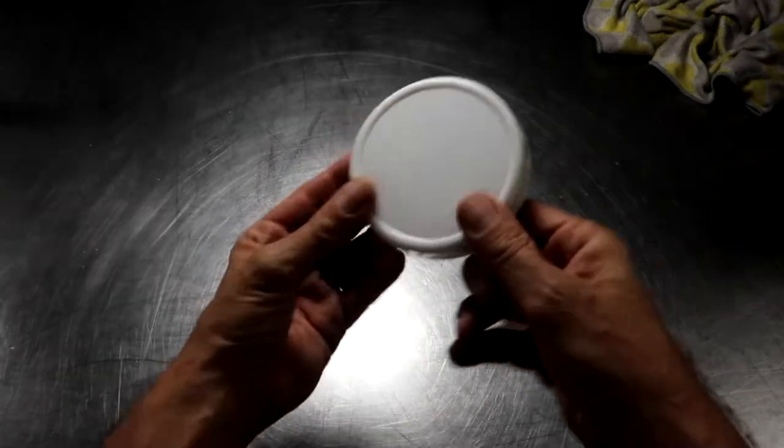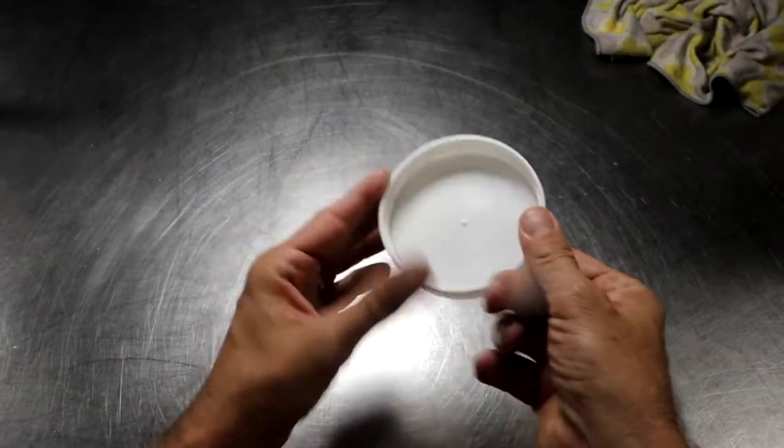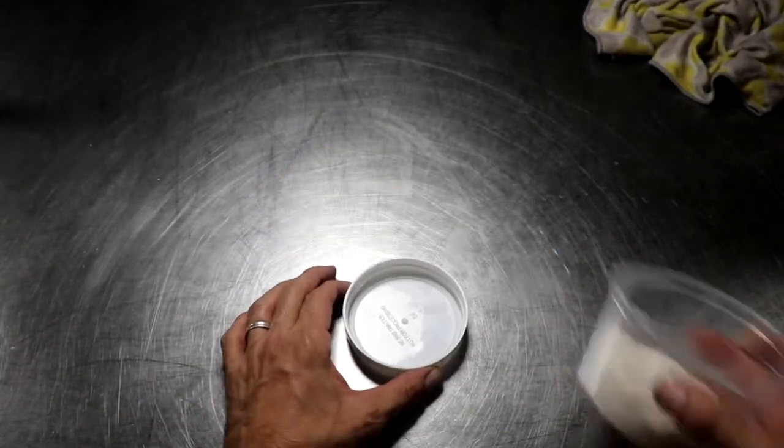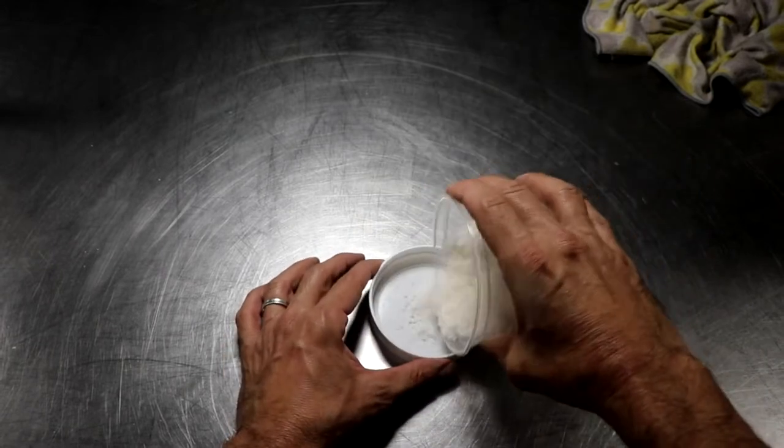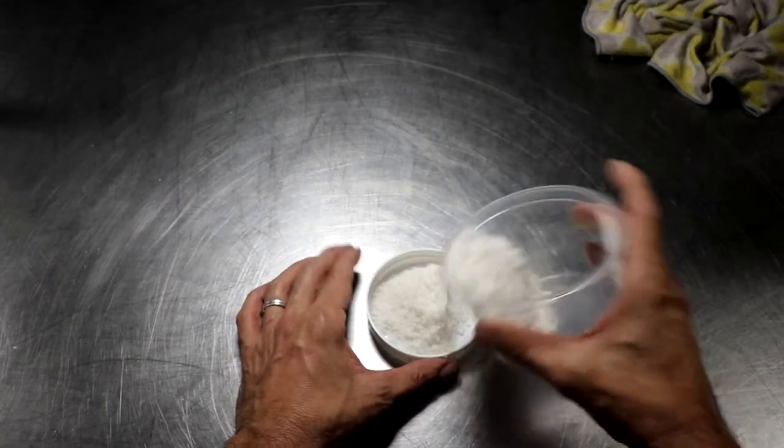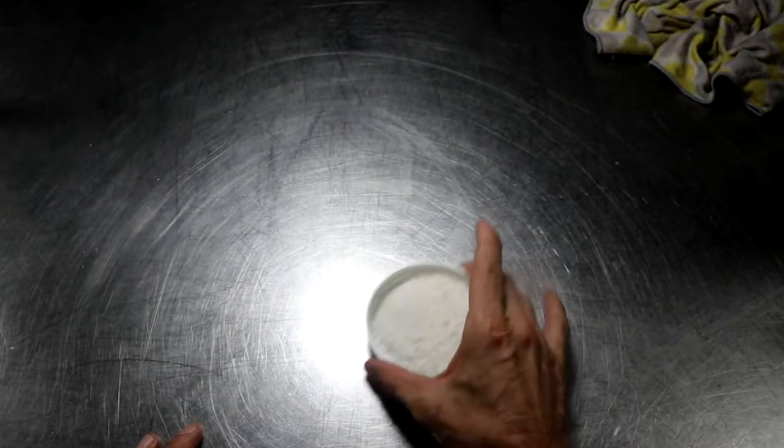The first thing we're going to calibrate is the humidity control and all we're going to do is in a lid. Depending on the size container you're working with, you could use a bottle cap or in this case, I'm using a relatively large lid and I'm putting salt that's free of any additives inside of it.